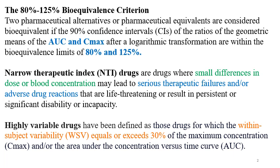If the 90% CI of the test or generic formulation is between 80 to 125% for Cmax and AUC compared to the reference, then Bioequivalence is demonstrated and the Bioequivalence criteria is fulfilled.